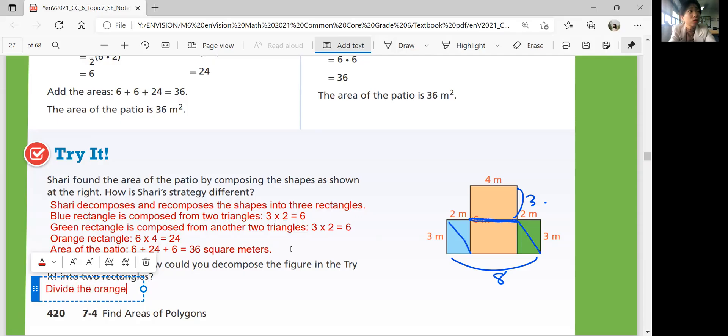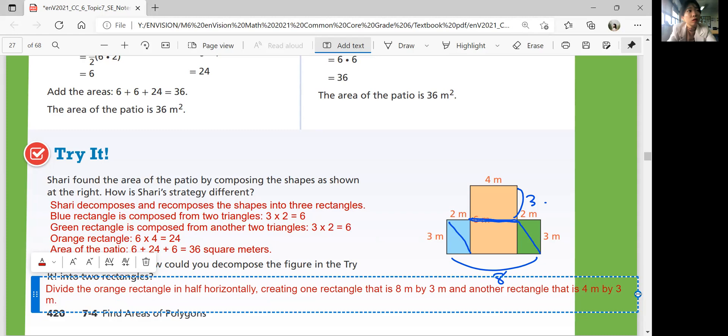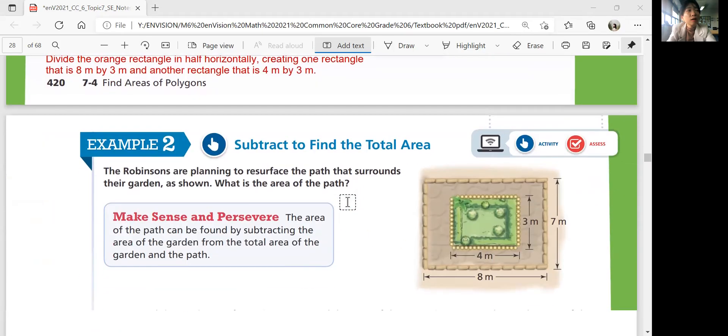And then create, you can create one rectangle that's 8 by 3 and another that's 4 by 3. But you can also do it in another way. There are multiple ways to decompose. Divide the orange rectangle in half. But remember, you cannot add or subtract numbers that's not already there.